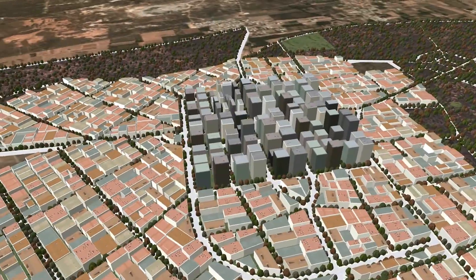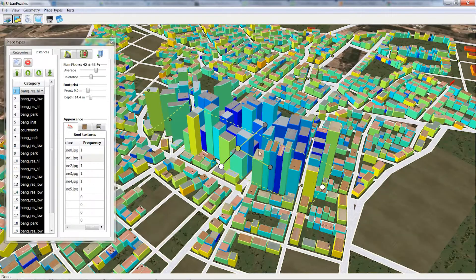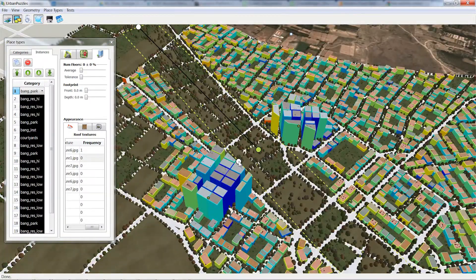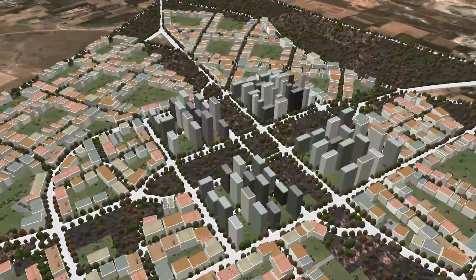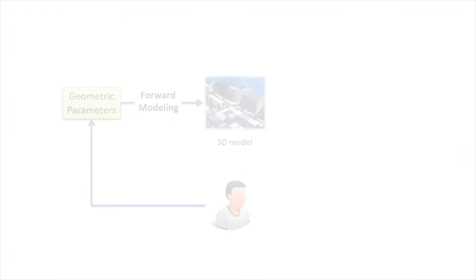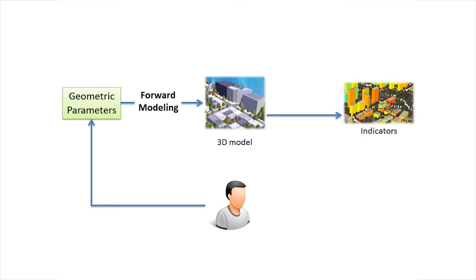We present an approach for editing an initial urban model using a coupled forward parameter-based modeling and inverse indicator-based modeling process. A user can specify parameter values for a provided procedural model. From the 3D output, it is simple to define output-sensitive indicator functions. Our work discovers how to control the procedural model so as to obtain the desired values for arbitrary indicator functions.